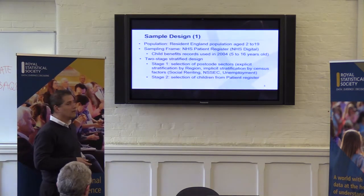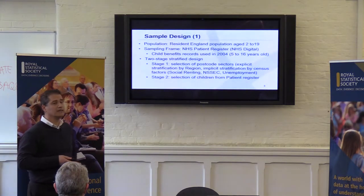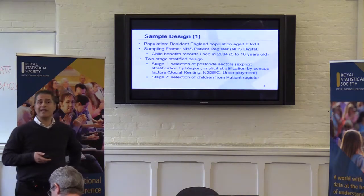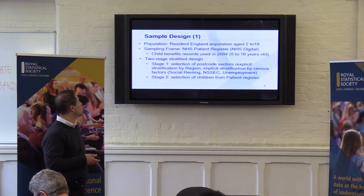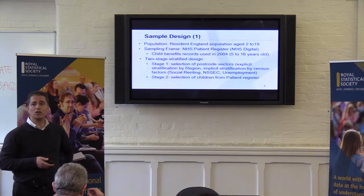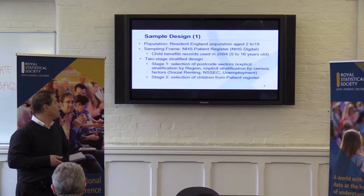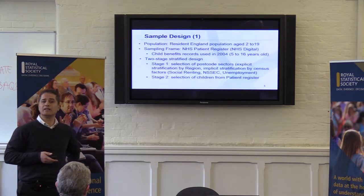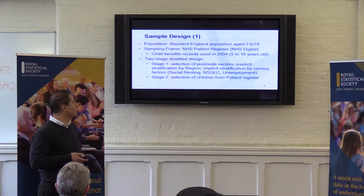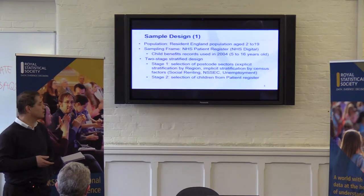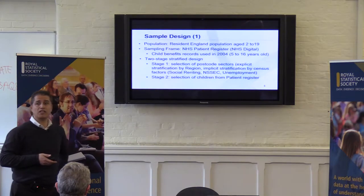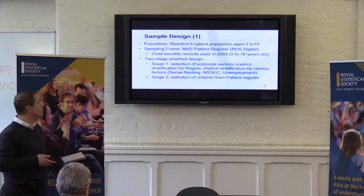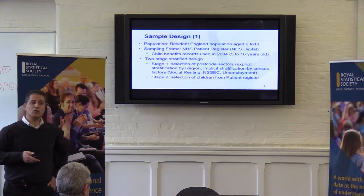In terms of sample design, the target population is the resident population in England aged between 2 and 19. In terms of sampling frame, because of efficiency in data collection, there were two candidates: the Child Benefits Records Register that was used in 2004, and the NHS Patient Register. The Benefits Register is now not as good in terms of coverage because of the changes to child benefits. So we wanted to use the NHS Patient Register, with the benefits record as backup. A little bit late in the day, we received agreement to use the Patient Register.